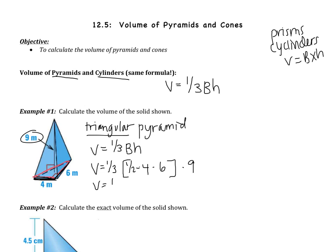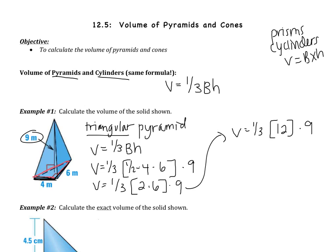Now let's do a little simplifying. Half of four is two, so I get two times six times nine. Two times six is going to be twelve. One-third of twelve is four. So four times nine is going to be thirty-six. My volume is thirty-six meters cubed.